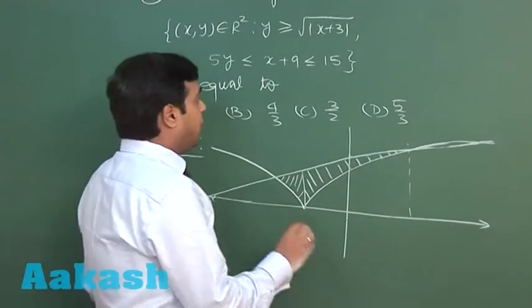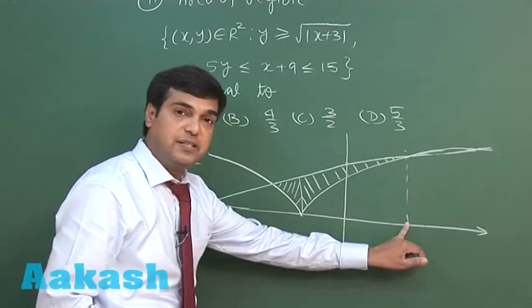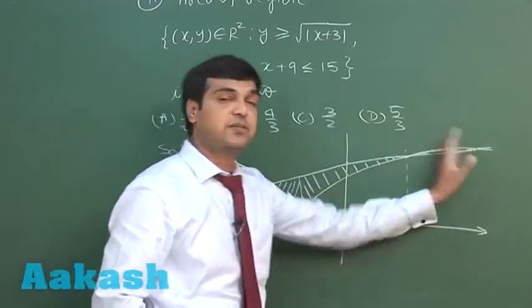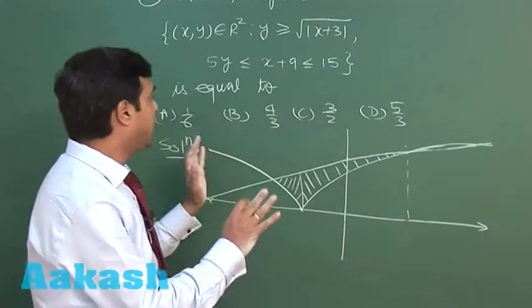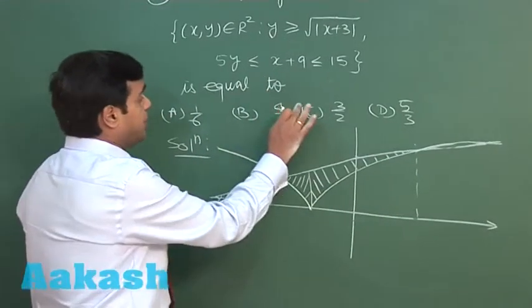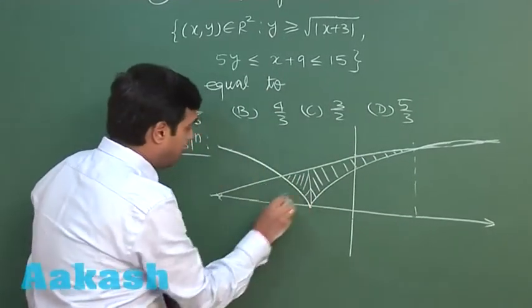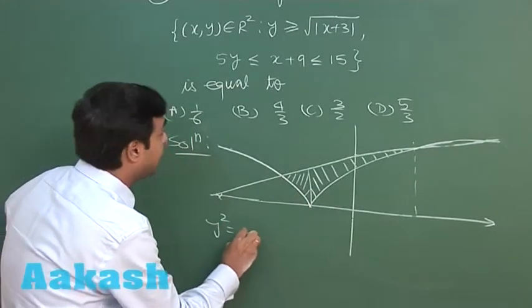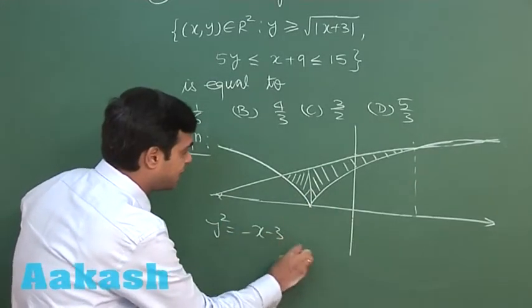Now we have to find these two points of intersections. That x less than or equal to 6 would not be required because I have to find the common. Solving this part, that is y squared equals minus x minus 3.